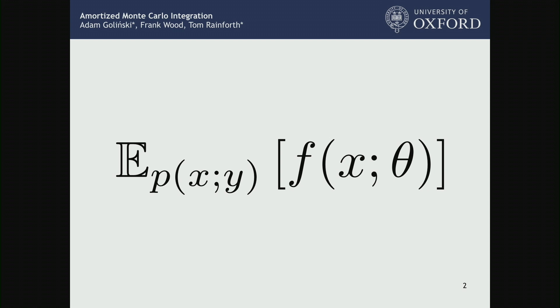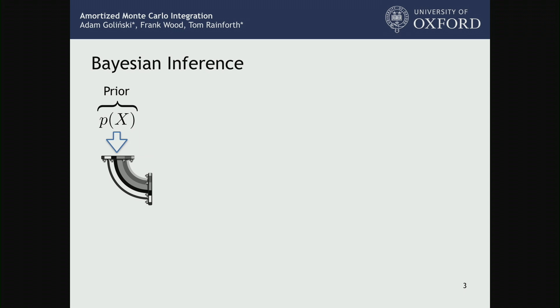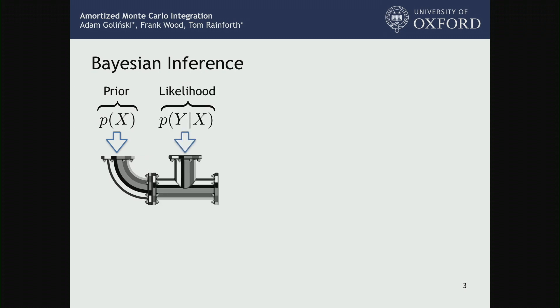Let's think about why we often have these kinds of problems where we can't directly sample from the distribution. The canonical example here is a Bayesian inference problem. In a Bayesian pipeline, we start by defining a distribution of some variables of interest x — we define a prior, some prior information about those variables before we see any data. Next, we define something called a likelihood function, which gives us a distribution of possible data we might see given a particular instance of the variables of interest.